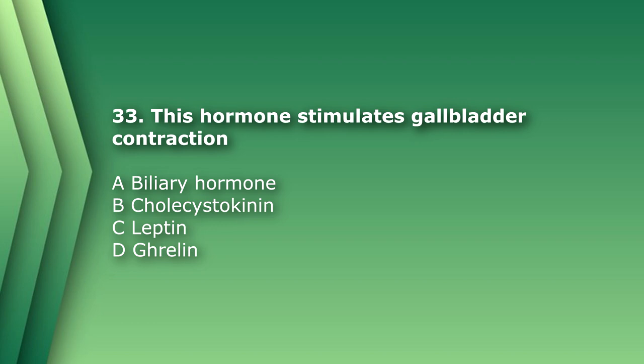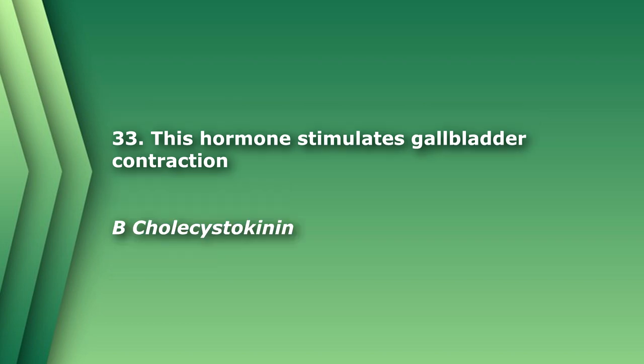Number 33. This hormone stimulates gallbladder contraction. A. Biliary hormone. B. Cholecystokinin. C. Leptin. D. Ghrelin. The answer is B, cholecystokinin, also known as pancreozymin. It is a hormone secreted by the duodenum that stimulates the contraction of the gallbladder, which helps digest fats and protein.